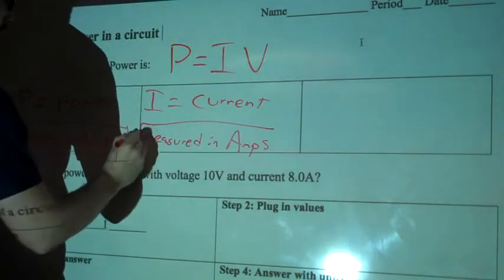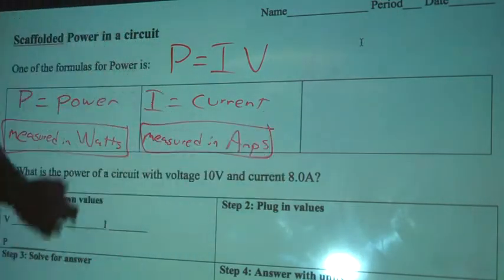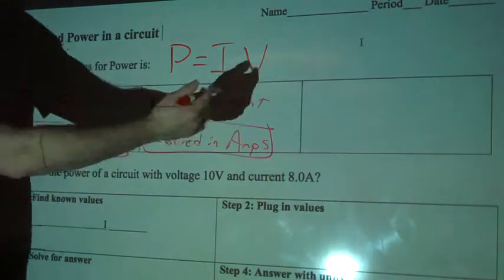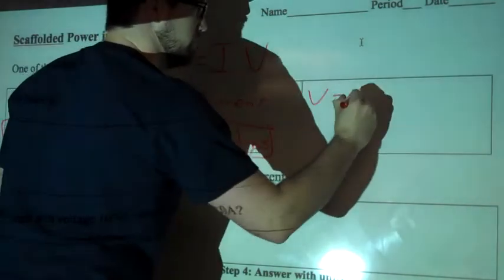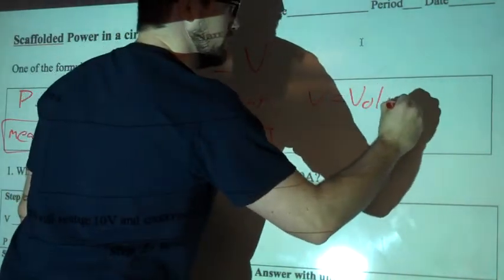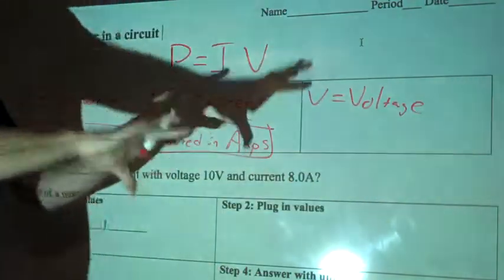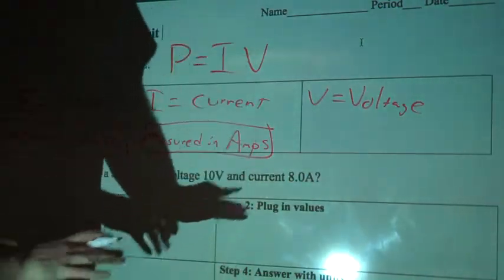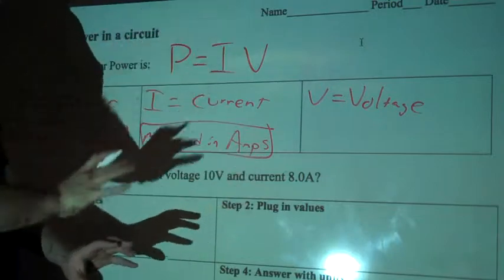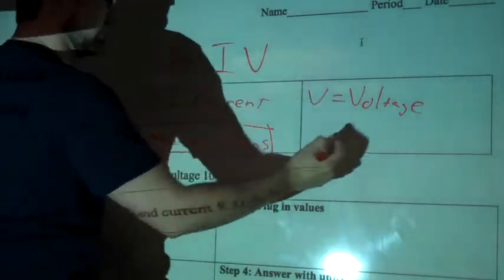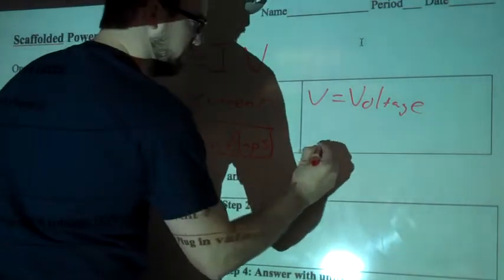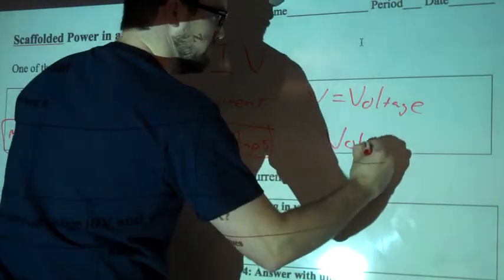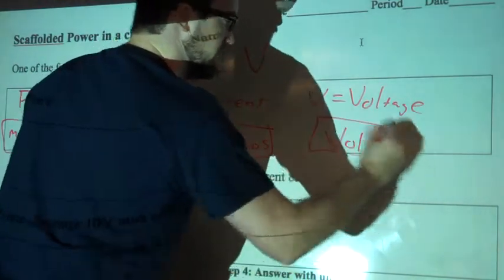And then we've got V, obviously, is voltage. From Ohm's law, we remember this. So V equals voltage. And that's the potential difference between the positive and the negative side of the power source of the battery. And so voltage is measured in volts. I'm just going to write volts down here because there's no way you can not remember that. Awesome.